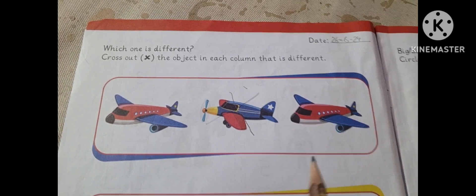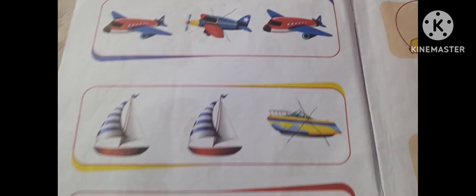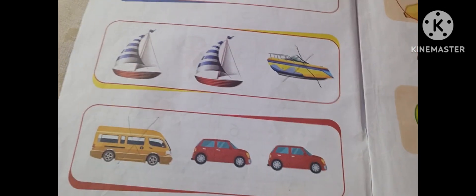Cross out the object in which column that is different. You can see that both are the same, so you don't have to. Cross out the same as it is.